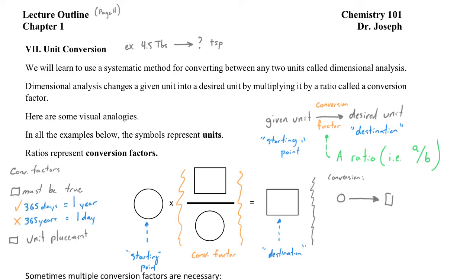The second requirement for conversion factors is that they need to have the unit placement correct — we need to have the right units in the top and bottom positions. Specifically, we have to have our destination unit — the one we're converting into — in the top position, which we call the numerator. In the bottom position, the denominator, we have to have the same unit as the starting point. As long as our conversion factor is used this way and is true, it will allow us to convert a given unit into a desired unit.